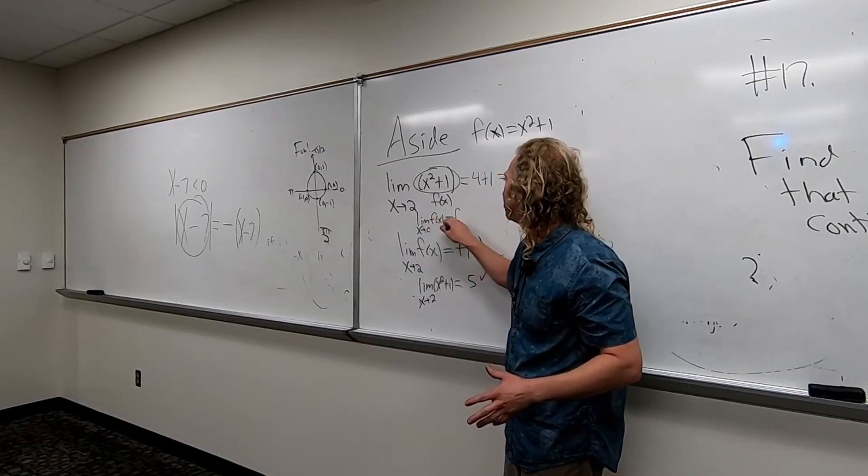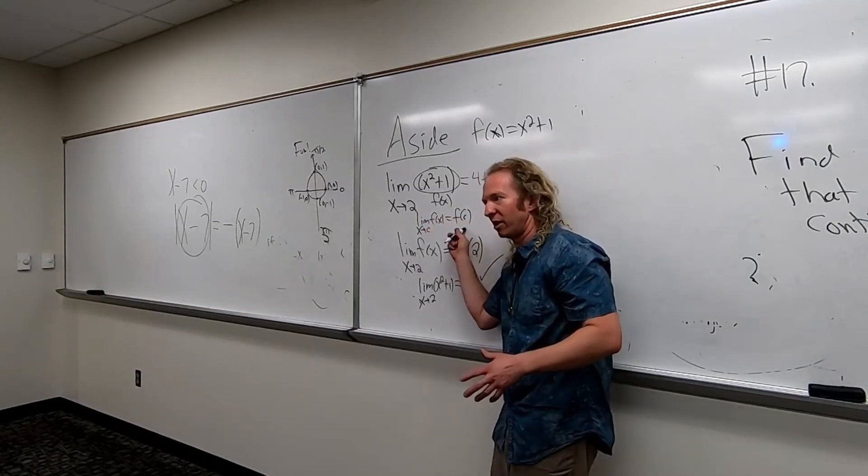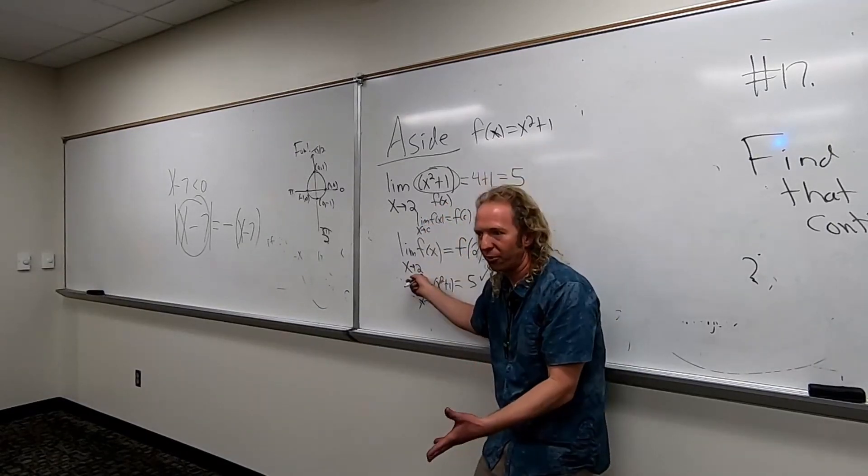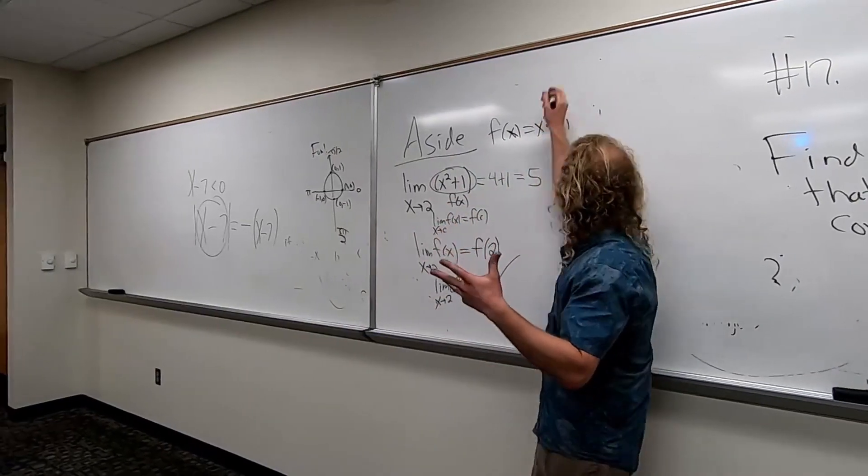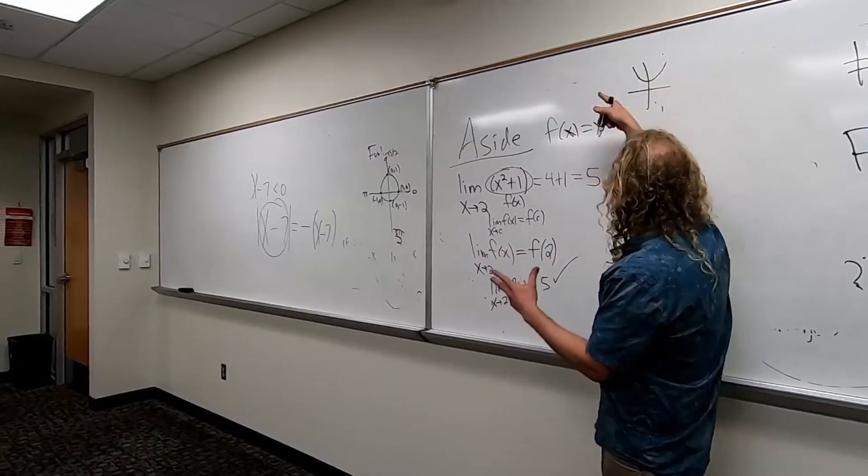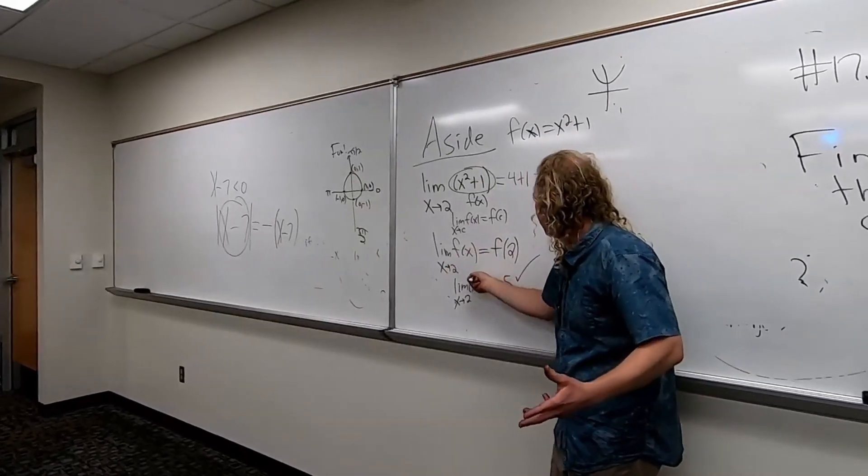So this is continuous at 2. This is continuous everywhere. It looks like this. So it's continuous everywhere. In particular, it's continuous at 2, so you can just plug the 2 in.